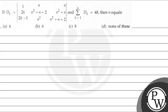The question says: if dk is the determinant of a matrix whose elements are 1, n, n, 2k, n squared plus n plus 2, n squared plus n, 2k minus 1, n squared, n squared plus n plus 2. Summation of k goes from 1 to n, dk is equal to 48. Then n is equal to: option a) 4, option b) 6, option c) 8, option d) none of these.